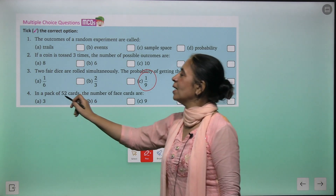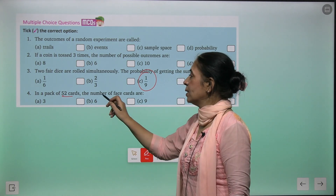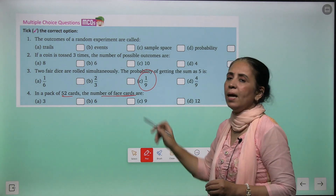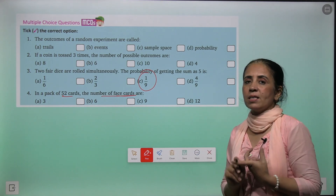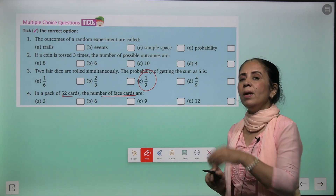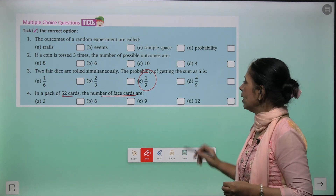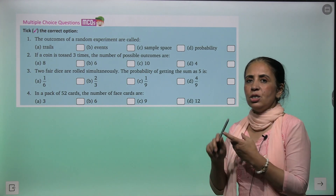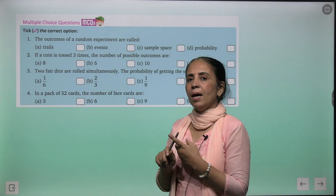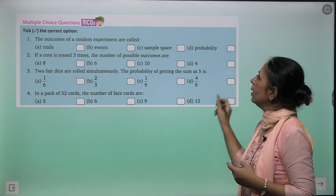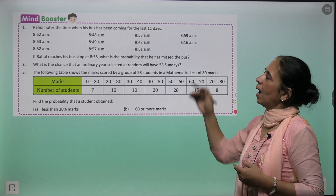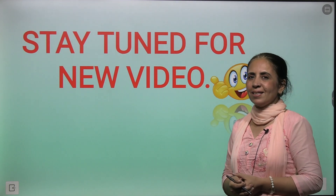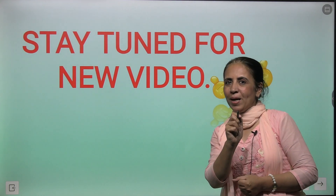In a pack of 52 cards, the number of face cards = 3 × 4 = 12. So there are 12 face cards: Jack, King, and Queen. Please do this mind booster yourself — it's time to say catch you later!